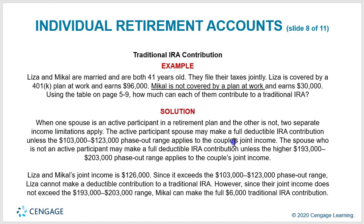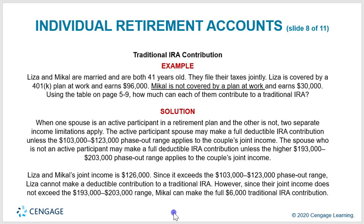The active participant spouse may make a full deductible IRA contribution unless the $103,000–$123,000 phase-out range applies to the couple's joint income. The non-participant spouse may make a full deductible contribution unless the $193,000–$203,000 phase-out range applies. Since Liza and Mikel's joint income is $126,000, it exceeds the $103,000–$123,000 range, so Liza cannot make a deductible contribution. However, since the joint income does not exceed the $193,000–$203,000 range, Mikel can make the full $6,000 traditional IRA contribution.